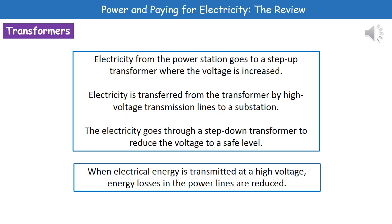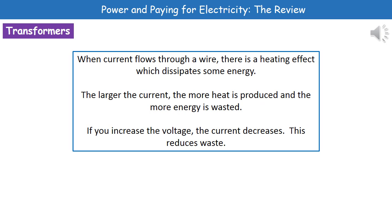The reason we use these transformers is that if we transmit electricity at a high voltage, we actually reduce the energy losses in the power lines. By having a step-up transformer outside the power station before electricity is transmitted, we reduce the losses through all those power lines. We then have to reduce the voltage at the other end before it gets into houses, because 400,000 volts in our homes would be extremely dangerous, and no appliances would work with that.